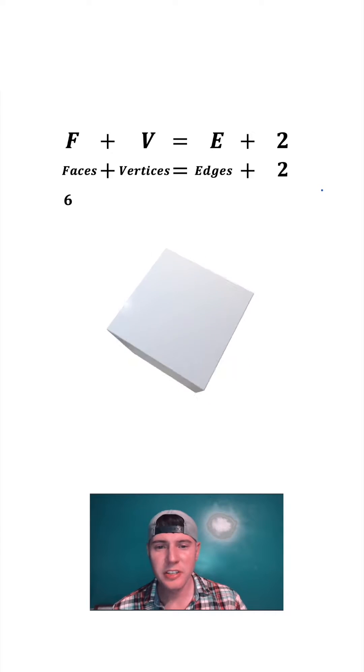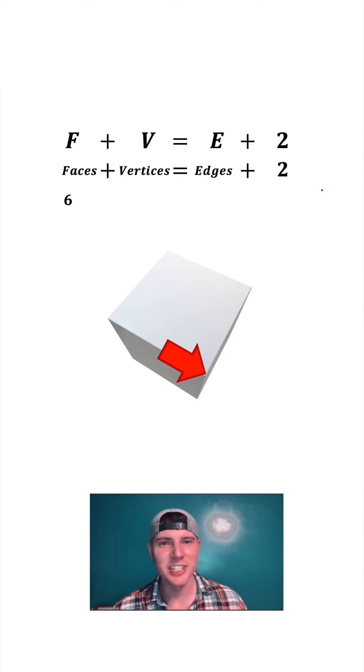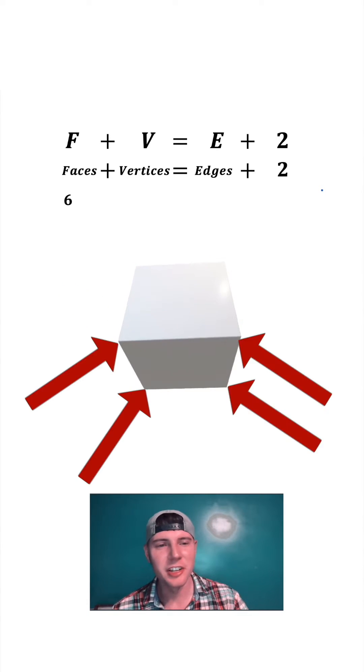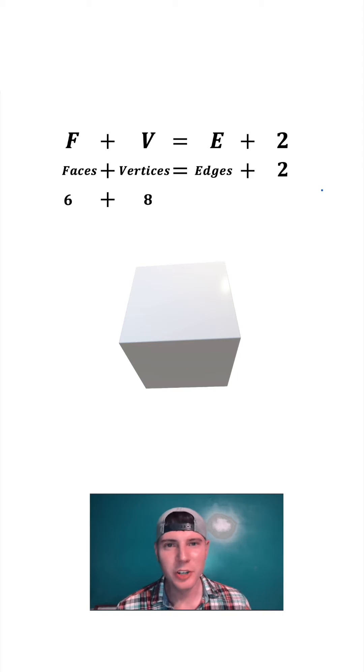and then four around the sides. For vertices, looking at the top, we have one, two, three, and four vertices. And then at the bottom, there's another four. So we have eight vertices in total.